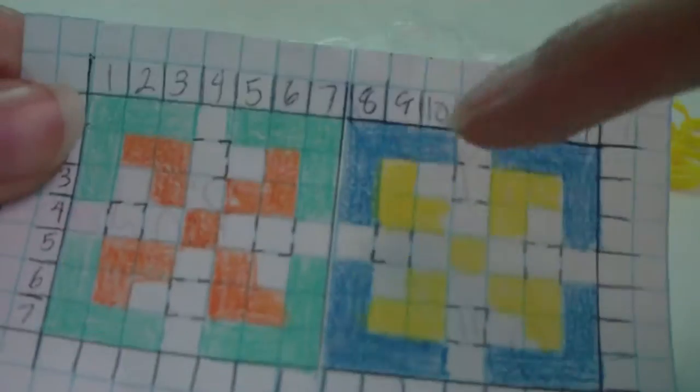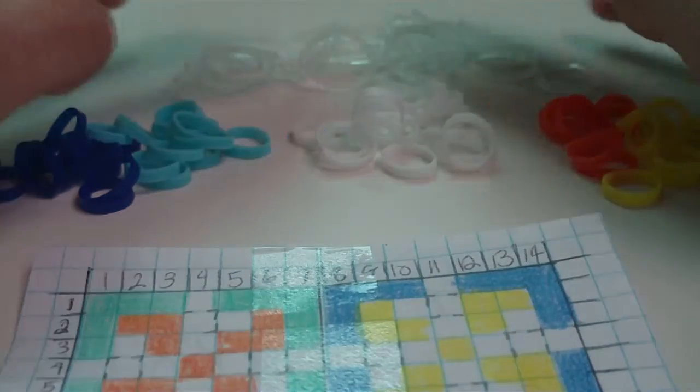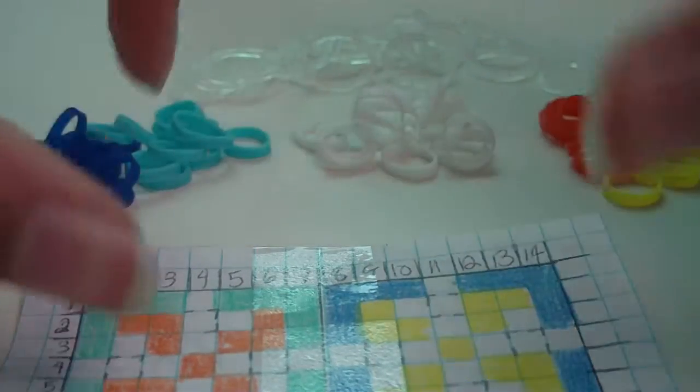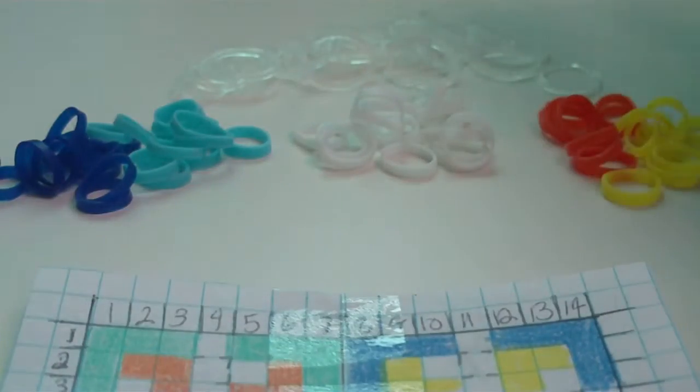Then the last group of bands you'll need will be the connector bands. You can't really see them here on the template because they're not really shown.